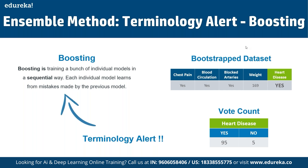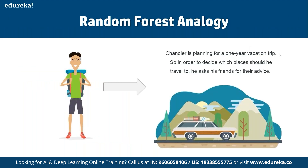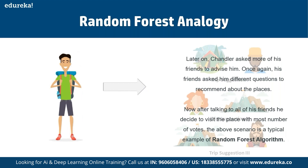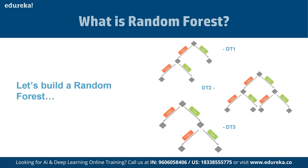Here's a random forest analogy: Chandler is planning a one-year vacation trip and asks his friends for advice. Each friend gives different suggestions — trekking, hiking, and more. Every friend asks him different questions to recommend places. He then asks one more friend for a recommendation. After talking to all his friends, Chandler decides to visit the place with the most number of votes.